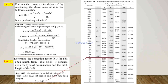In step 7, we find the correct center distance by substituting the selected standard pitch length L = 3200 mm back into the center distance equation. Using this value, we obtain the corrected center distance C = 950.64 mm.